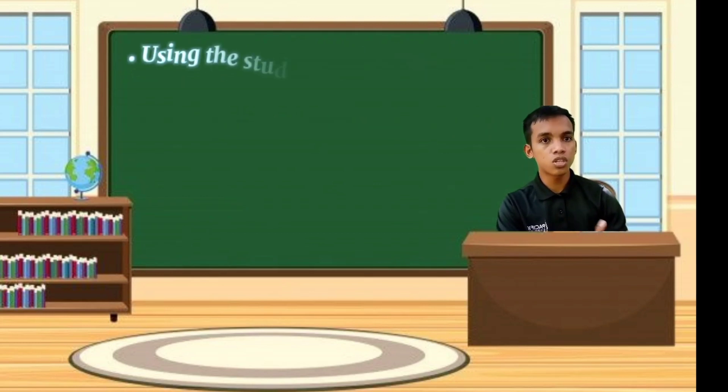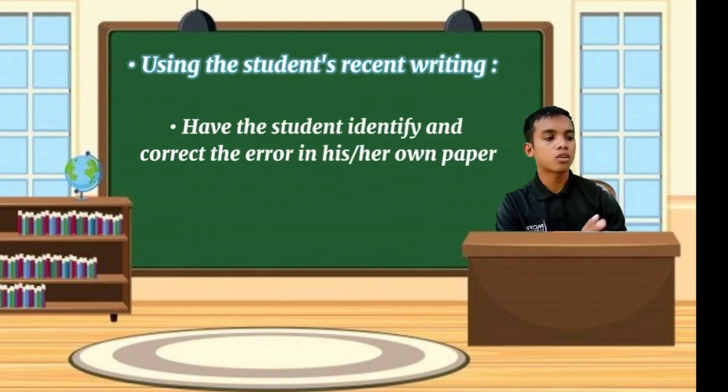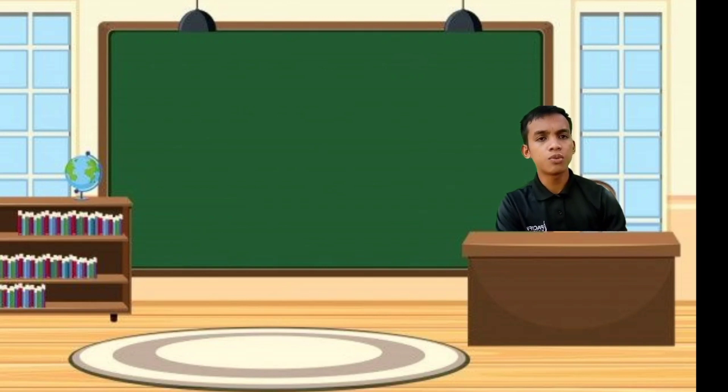If you need to use conference time, address grammar one-on-one in context. Use the student's recent writing. Focus on one pattern of error at a time. Have students identify and correct the errors in his or her own paper. Model revision techniques or alternatives. If you meet with your students for individual conferences, this would be a great time to talk with each student about his or her specific grammatical errors and/or concerns. Working individually with students gives them personalized attention on their writing and also gives them a safe context in which to ask questions.